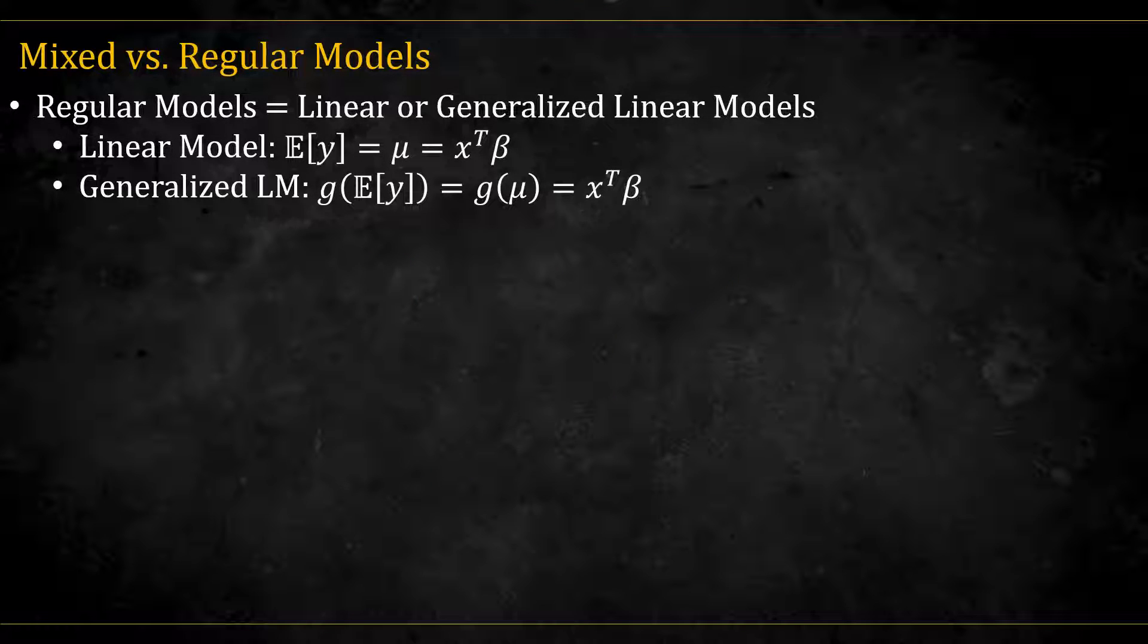But let's recap what are the main differences between mixed and regular models. What I mean by regular models is either linear regression, where the mean of a distribution is dependent on some predictors, or generalized linear models, where some function of the mean is dependent on some predictors. In linear models, the distribution of y is continuous and usually assumed to be normal. In GLMs, it can be any distribution from a family of distributions, for example, Bernoulli, Poisson, Gamma, etc.